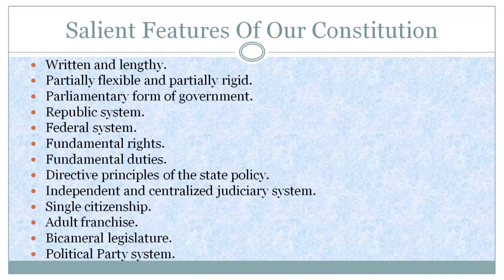Salient features of our constitution. Written and lengthy constitution: Our constitution is in written form. The powers and functions of the organs of the government are all in written form. Partially flexible and partially rigid constitution: The constitution which can be easily amended or updated is called a flexible or simple constitution. Constitutions that have special procedures for amendment are called rigid or complicated constitutions. Our constitution is neither too flexible nor too rigid.